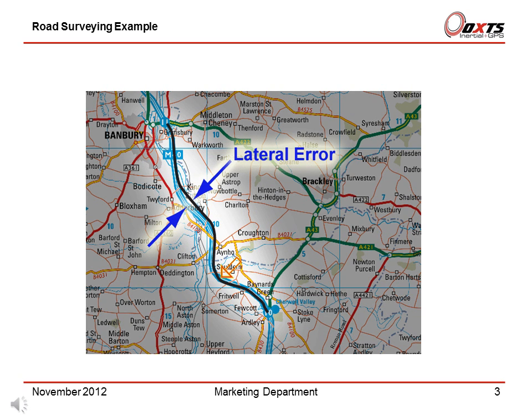Now let's look at a road surveying example. To test the accuracy of the RT systems for survey applications, we drove down a motorway. We repeated the route many times, always using the same lane. The graphs on the following pages plot the lateral error of the RT on each route. The distance along the motorway is about 12 kilometres.